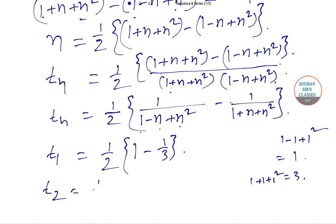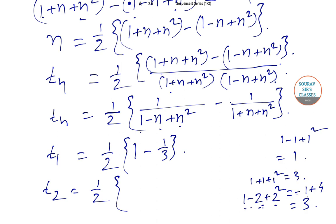T₂ = ½[1/(1−2+2²) − 1/(1+2+2²)]. For the first bracket: 1−2+4 = 3, so it is 1/3. For the second bracket: 1+2+4 = 7, so it is 1/7. Therefore T₂ = ½[1/3 − 1/7].